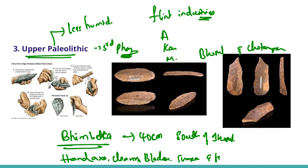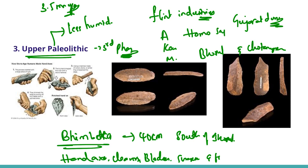Similar assemblages have also been found in the upper levels of the Gujarat dunes. It is very difficult to estimate the beginning of the Paleolithic age; in the world context, human remains associated with stone tools are as old as 3.5 million years. Through several stages, modern human beings — that is, Homo sapiens — first appeared in the Upper Paleolithic age. The Paleolithic sites are found practically in all parts of India except the alluvial plains of the Indus and the Ganga.